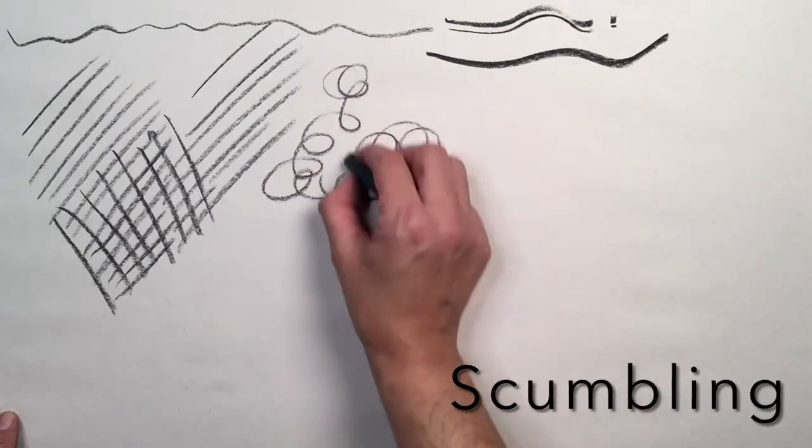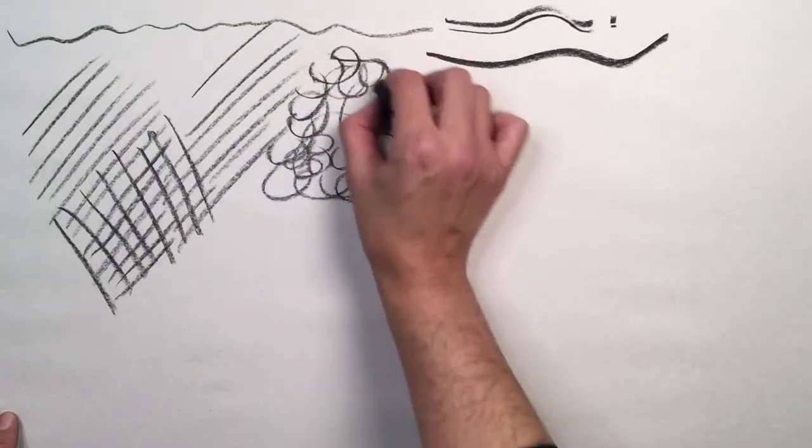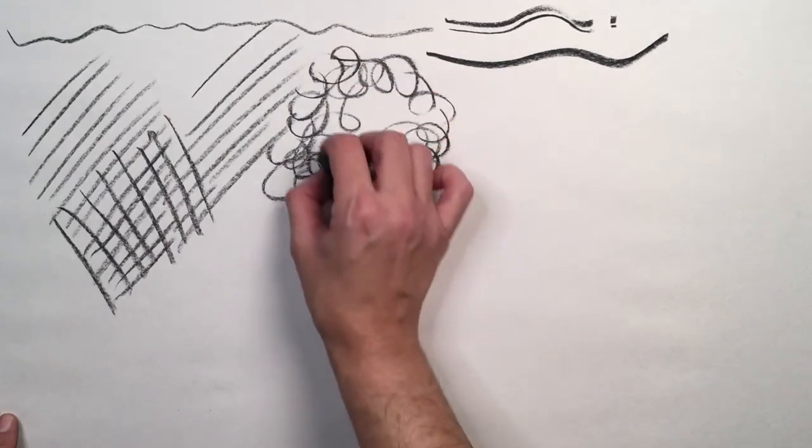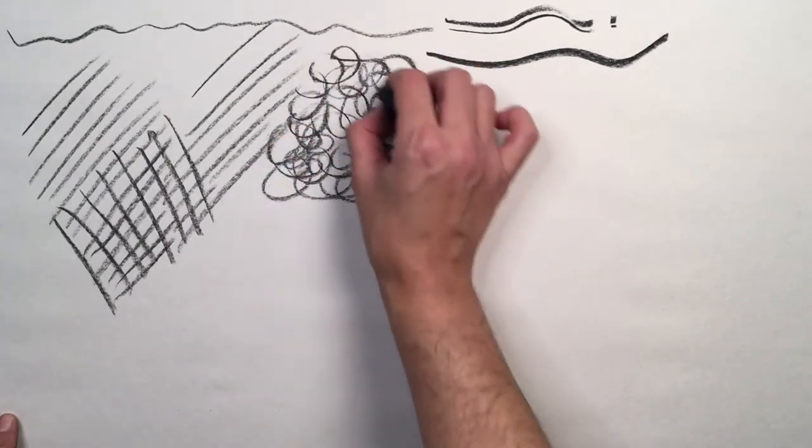This kind of swirling circular motion that I'm drawing in now is actually a technique called scumbling.